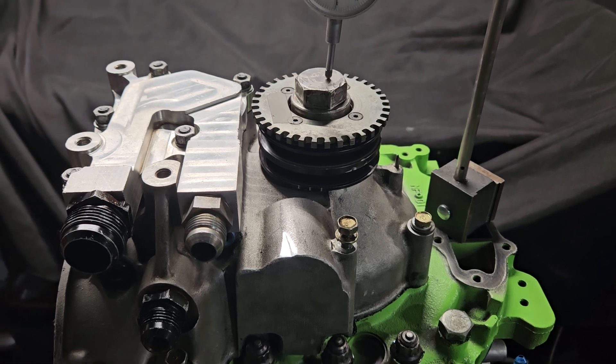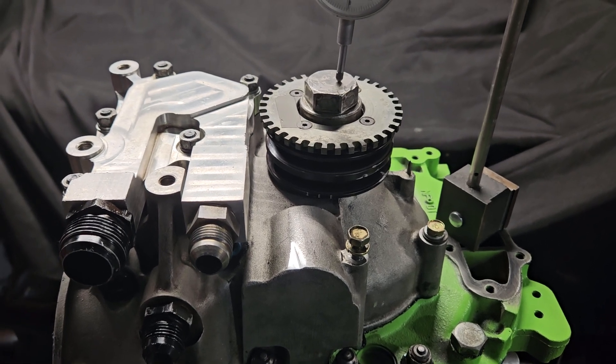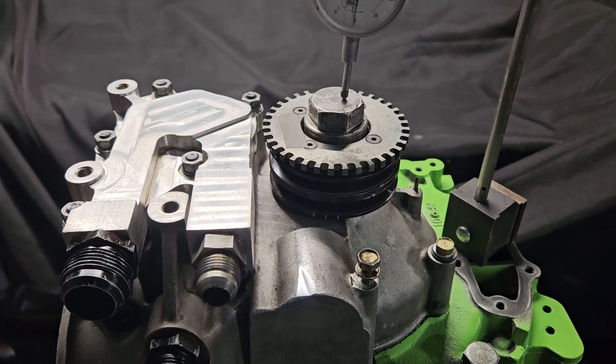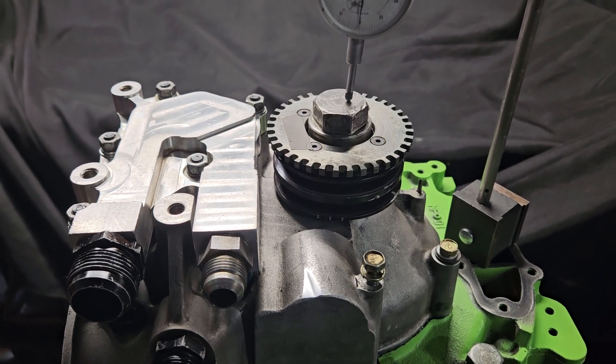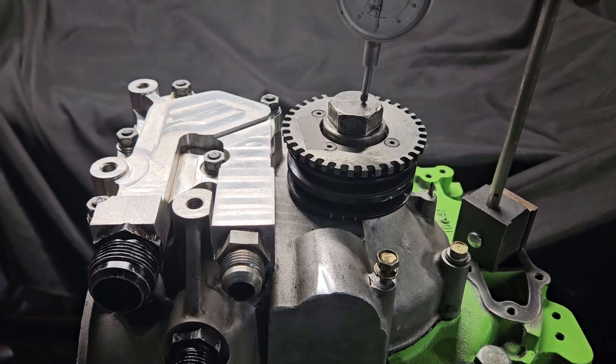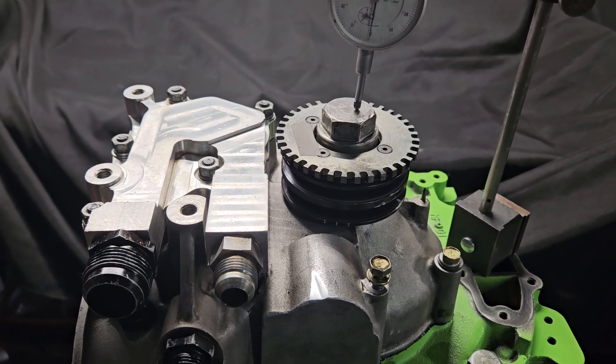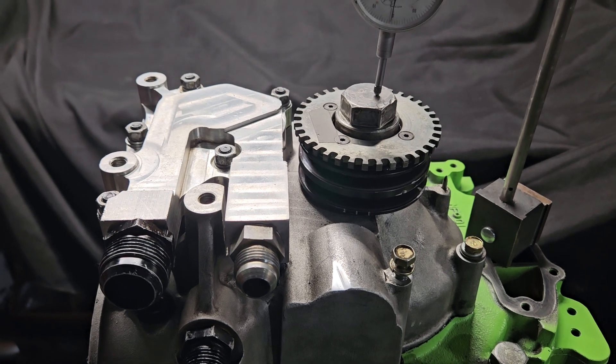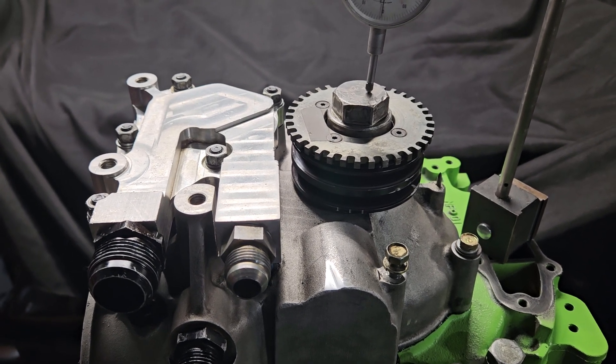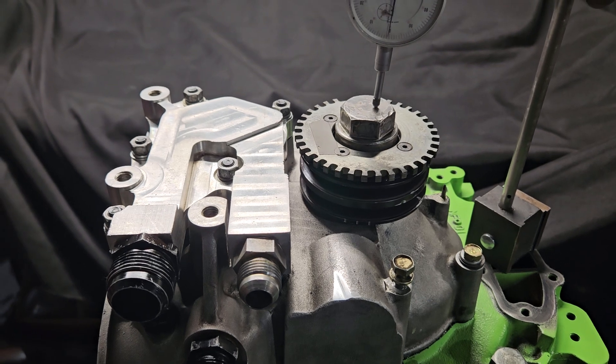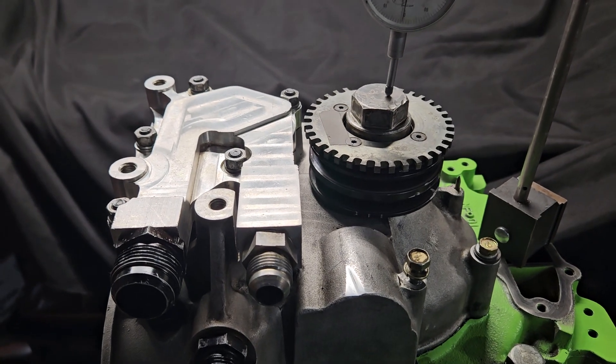There are different spacers for different engine generations. Third generation and RX-8 share the front end spacer similarly. And then 12A and first gen, second generation 13B share the same style of spacer. So there is two different generations of spacers that you would need to source depending on the type of engine you're building.